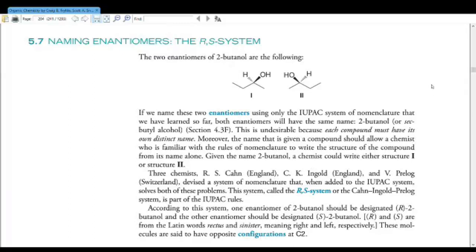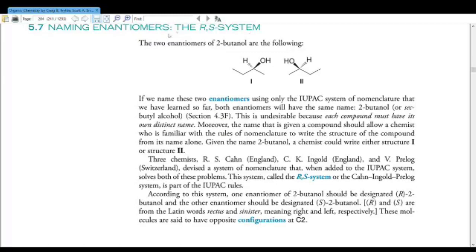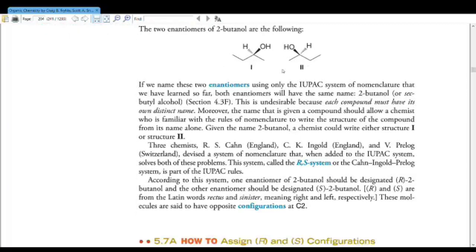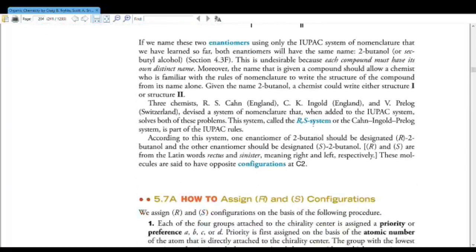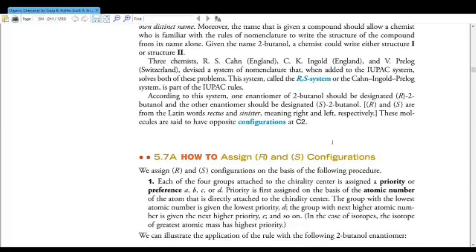Remembering that this is the Cahn-Ingold-Prelog system can open doors for you. Now this gets involved. I really hope you've got a good mental eye because you're going to need it. So we see the two enantiomers of 2-butanol right here. We need a way to name this shit. So we can designate them either R or S. R means rectus, S means sinister. As in Latin, I think, for right and left. You can also look like a badass if you remember what R and S actually stand for.